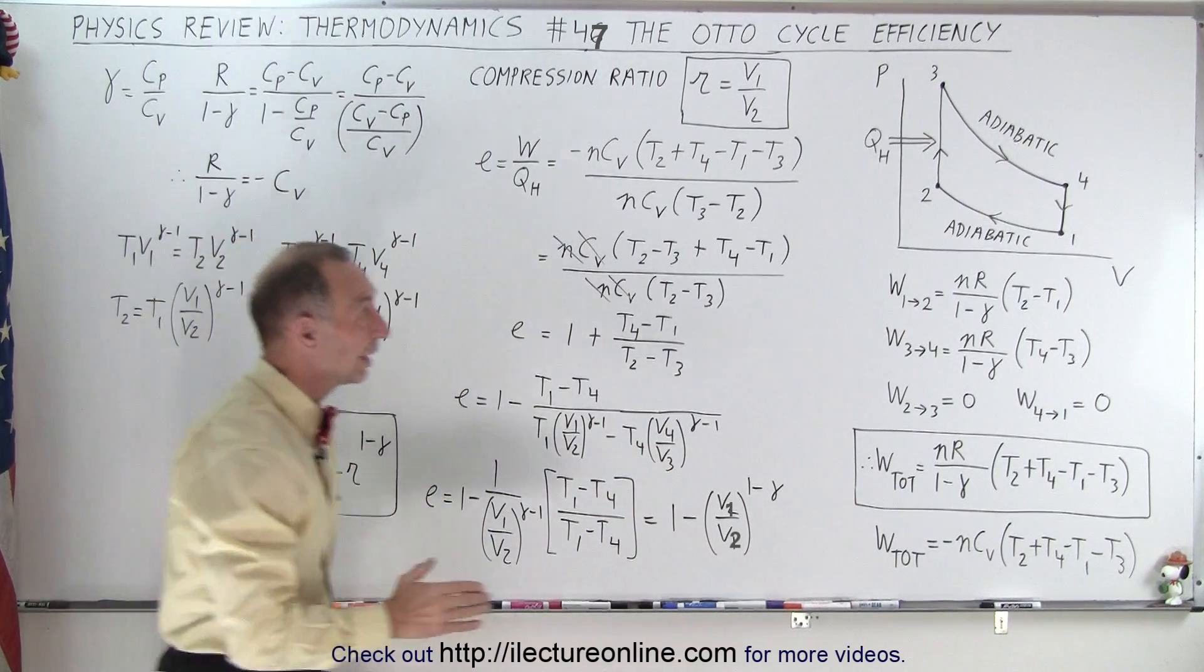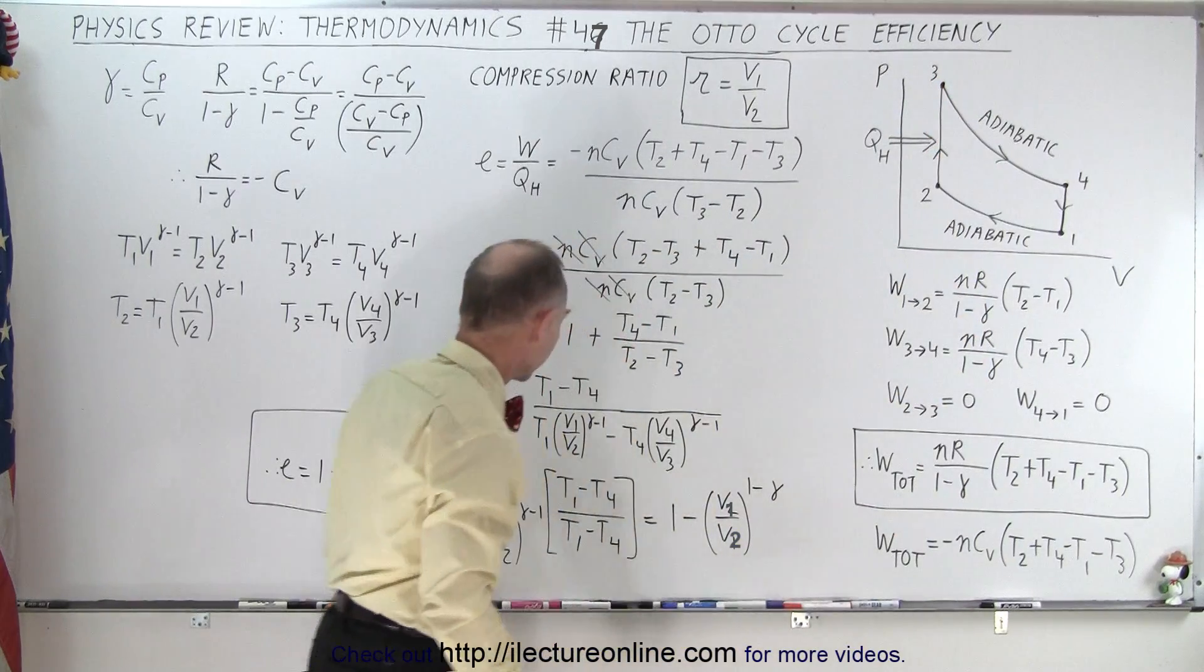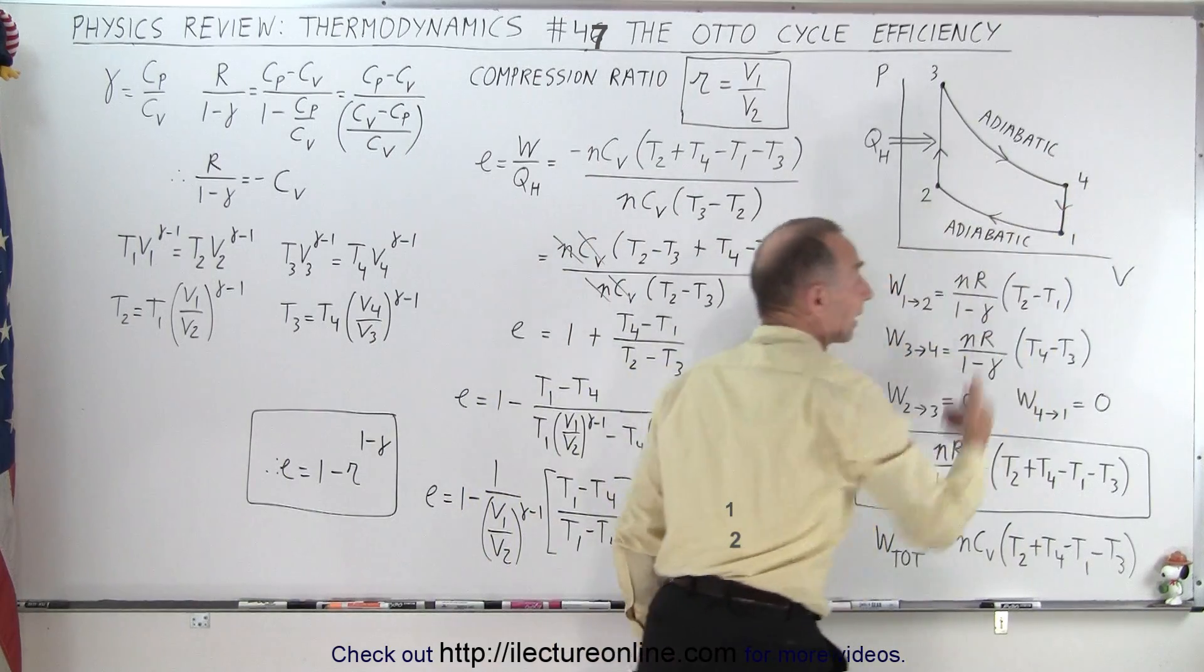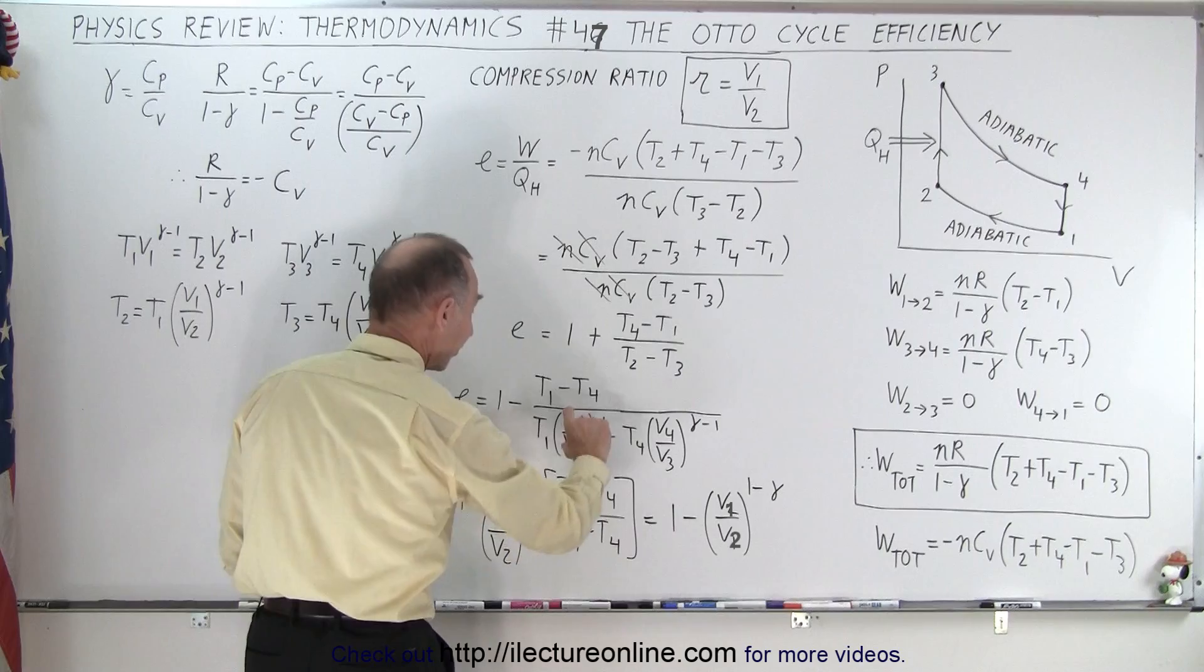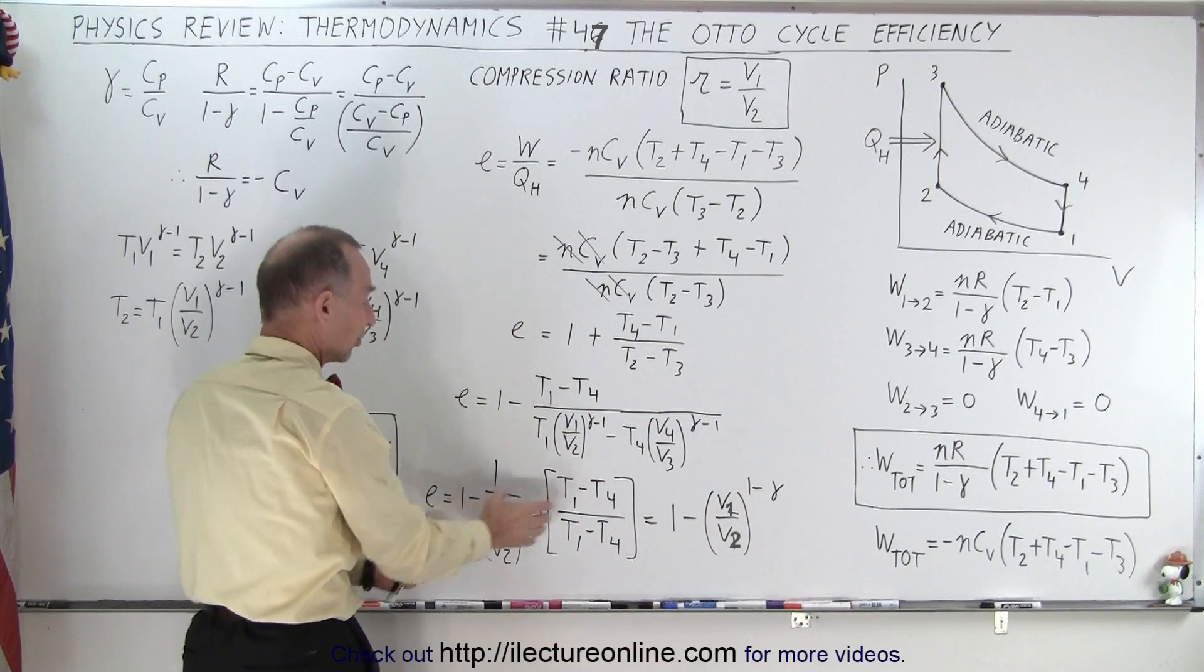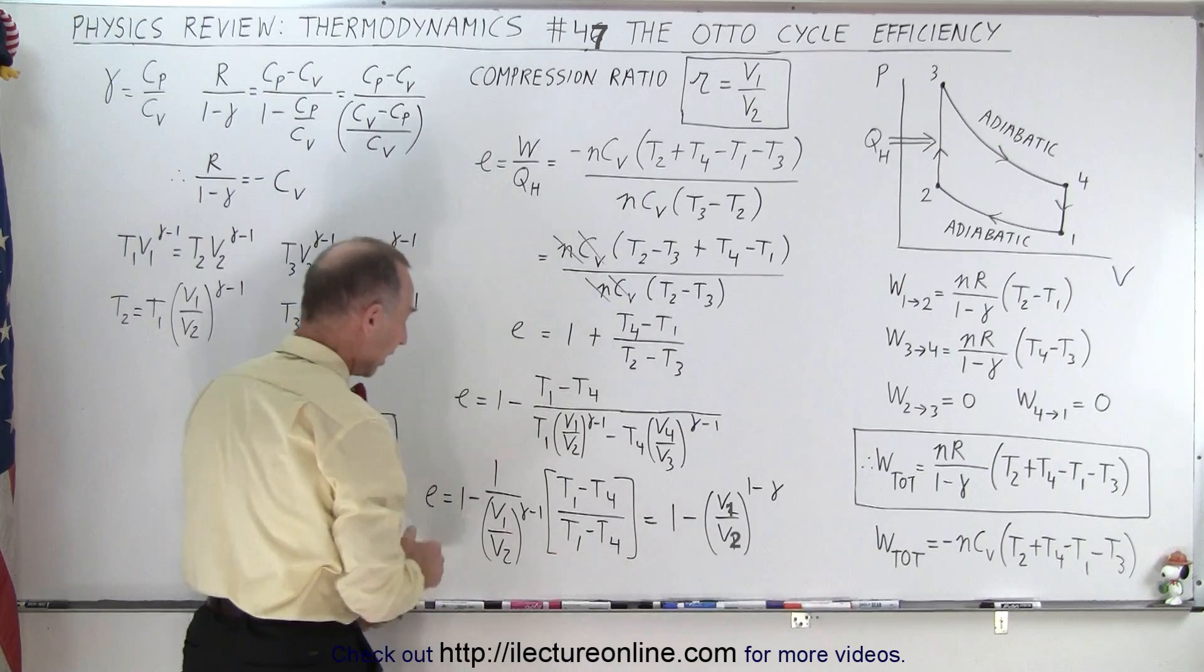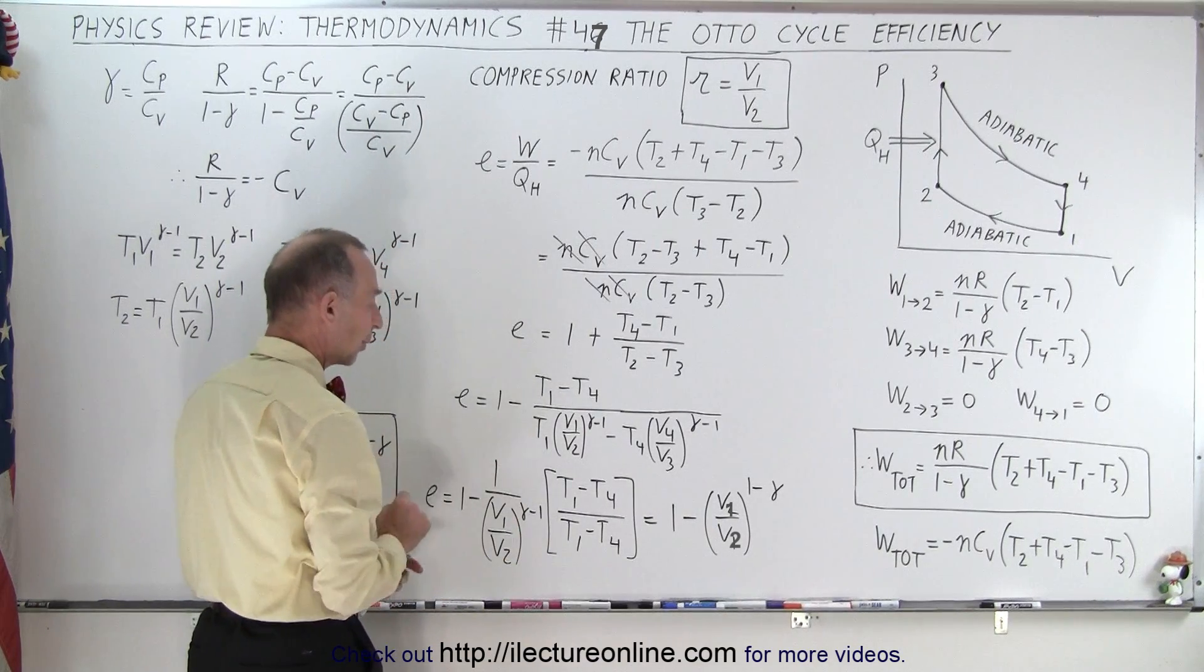Notice in the isovolumetric process, V3 and V2 are equal, and so are V1 and V4. That's an isovolumetric process, so those are equal. This fraction is the same as that fraction, so we can write this as V1 over V2 to the gamma minus 1 and factor it out, which is exactly what we did here. This now becomes equal to 1.